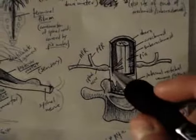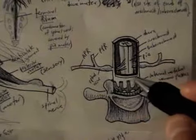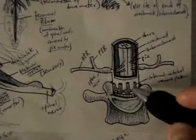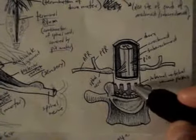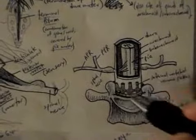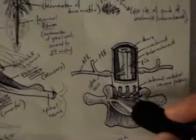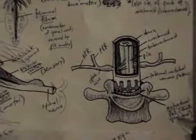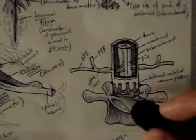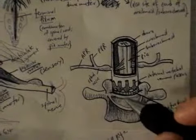So here, the dura mater is this white portion, and you can see it is surrounded by the internal vertebral venous plexus here. And then outside of the internal vertebral venous plexus, there is a layer of fat tissue called extradural fat, because it's outside of the dura mater, extradural.